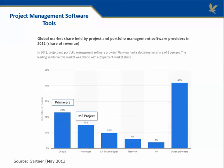Let's take a look at some of the tools that are out there. This is from Gartner in May 2013. If you look at the top project software tools used by industry, number one is put out by Oracle and it's a package called Primavera. The next is MS Project, and often in large companies the server version is used. Then there's CA Technologies, followed by PlanView, HP, and then other providers.